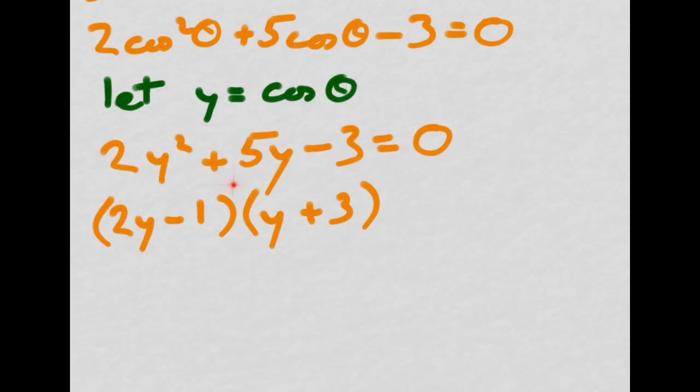A quick check. 2y squared plus 6y minus y minus 3. So it does work and that's still equal to 0. And then equate each bracket to 0. That would be rearranged to give y is equal to 1 half. And over here if y plus 3 is 0, y is equal to minus 3.